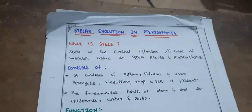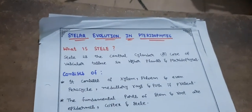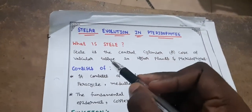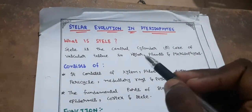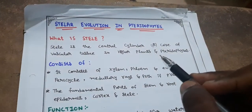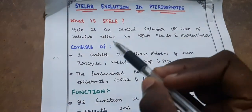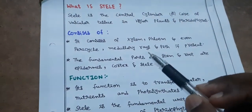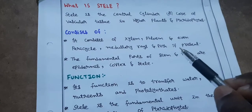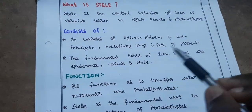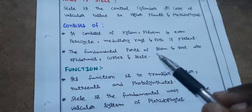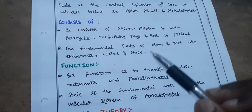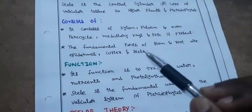First, what is stele? Stele means it is the central cylinder or core of vascular tissue in higher plants and pteridophytes. It consists of xylem, phloem, pericycle, medullary rays, and pith if present. The fundamental parts of stem and root are epidermis, cortex, and stele — and we are now studying about the stele.